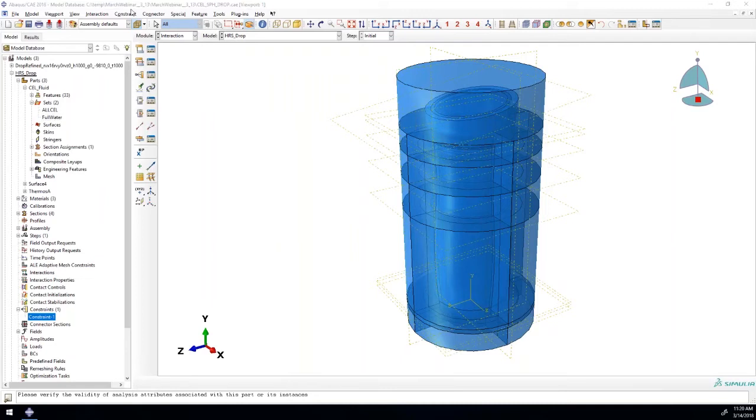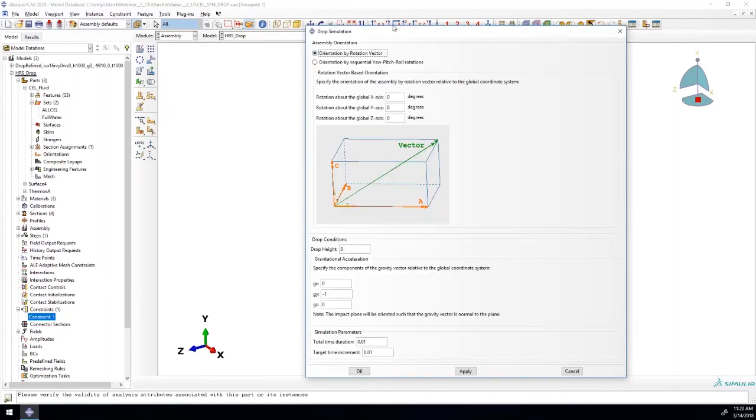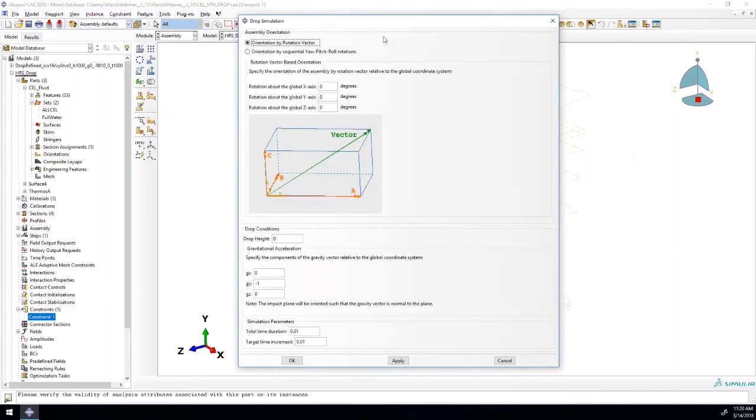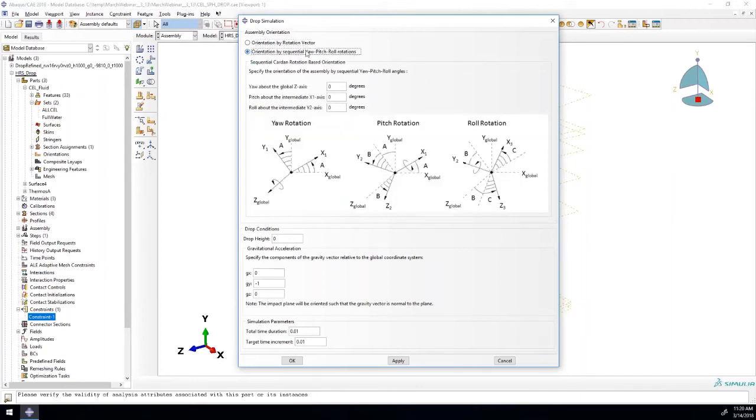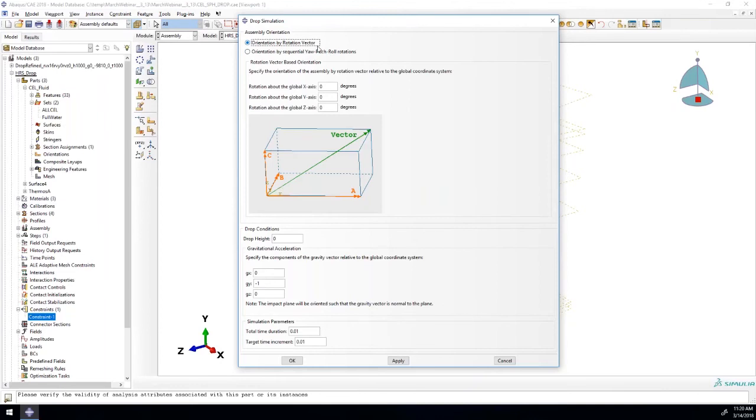We can skip the step module for now. The drop test plugin will actually take care of that for us. We can move down to the interaction module where the last part of our pre-setup has been done. All that we've done there is specified a tie constraint between the cap and the rest of the bottle to represent those physical threads that would actually be holding them together in real life. For the purpose of the analysis, we've just removed those for simplicity's sake. With that done, we can actually open up our drop test plugin here by going to our plugins dropdown and then selecting it.